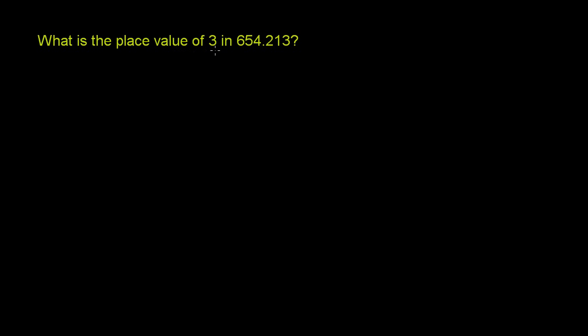What is the place value of 3 in 654.213? So let's think about that a little bit. To do that, let me rewrite the number, and I'll write each digit in a different color. So we have 654, point—we get the decimal point—2, 1, 3.